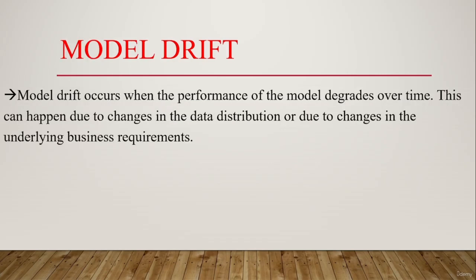Next is model drift. Model drift refers to changes in the machine learning model itself over time — specifically, when the mapping of input to output variables changes over time. Model drift can occur due to changes in business requirements, changes in the data used to train the model, or changes in the performance of the underlying algorithm. Data drift and model drift are closely related concepts. Model drift can result in a decrease in the accuracy of the model or other issues such as false positives or false negatives.